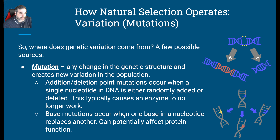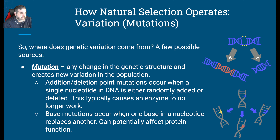Base mutations: if you know enough about DNA, you know it's made of four bases — adenine, thymine, guanine, and cytosine. If one of those bases randomly gets replaced by another, then we have a mutation as well, which can potentially affect the protein's function. When the DNA gets transcribed into RNA and the RNA gets translated into a protein, that protein is not going to work properly because it doesn't have the appropriate materials.